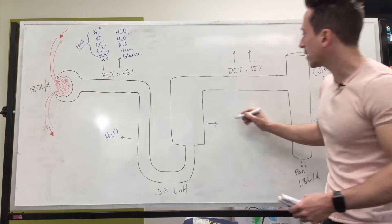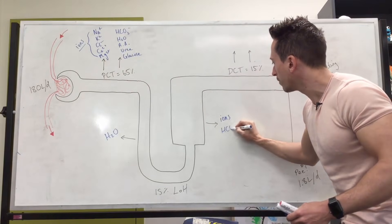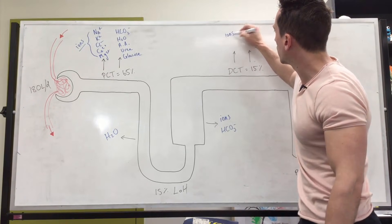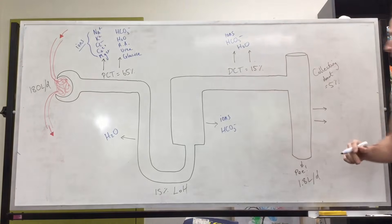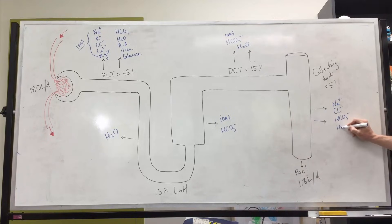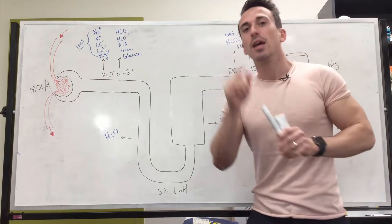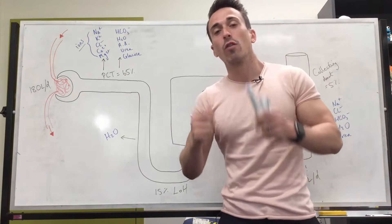At the thick ascending limb, what we're reabsorbing is ions and bicarbonate. At the distal convoluted tubule, we're reabsorbing ions, bicarbonate, and water. And at the collecting duct, we have sodium, chloride, bicarbonate, water, and urea being reabsorbed. These are the major ions, nutrients, and substances being reabsorbed back into the body in these particular areas — that's the process of reabsorption.